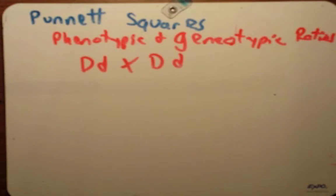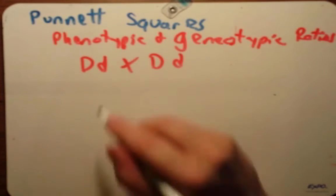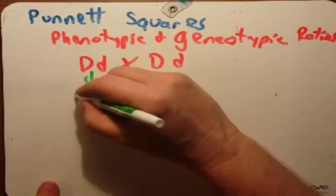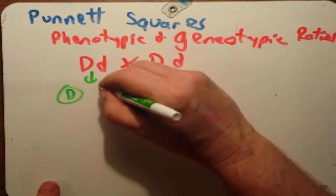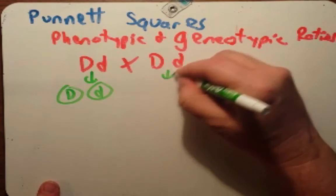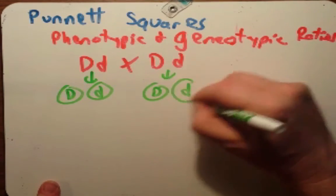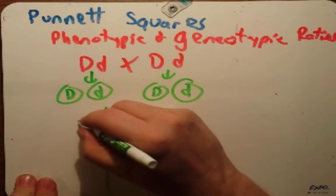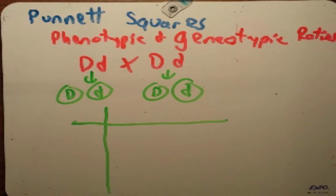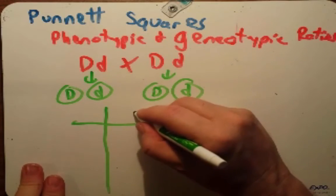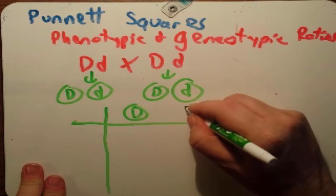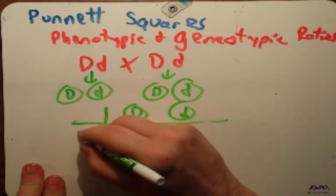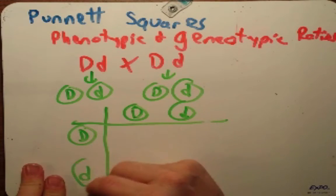To set up this cross using a Punnett square, what you do is recognize that these parents, when they make gametes, they're going to make a big D gamete and a little d gamete. Same thing with this parent, big D gamete and a little d gamete. When we construct our Punnett square, that's what goes on these axes. The gametes. So we have a big D gamete here and a little d gamete. Big D gamete and then a little d gamete.